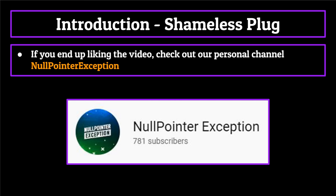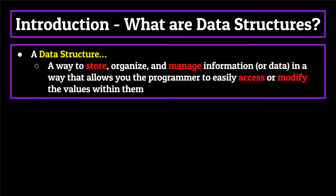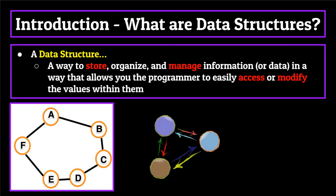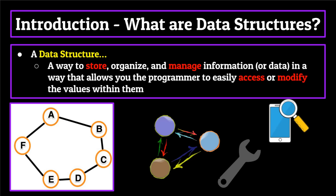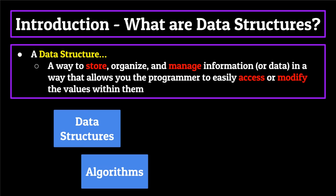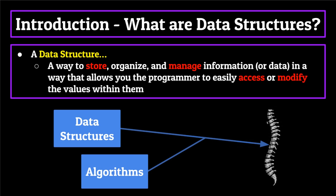In this introduction segment, we'll simply cover a general overview of what data structures are, and then go over what type of information will be covered throughout the duration of this series. So the obvious question to start with is: what exactly is a data structure? Well, in computer science, a data structure is a way to store, organize, and manage information or data in a way that allows you the programmer to easily access or modify the values within them. Essentially, it's a way for us to store a set of related information that we can use for our programs. Data structures and the algorithms used to interact, modify, and search through them provide the backbone for many of the programs you'll end up writing. I can almost guarantee that in 99% of your programs, a data structure will be involved.